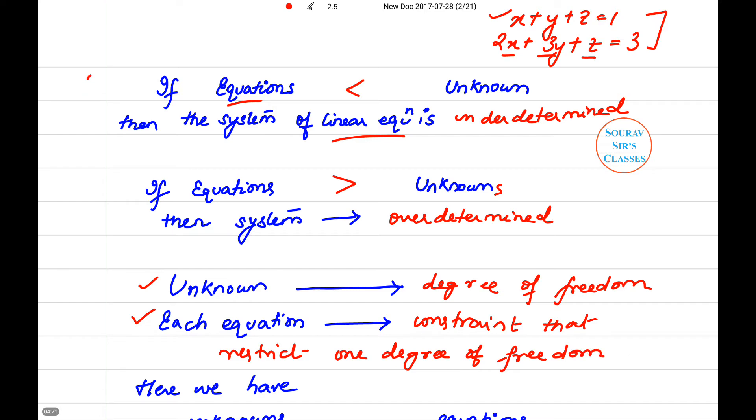That means there is imbalance, and there will be a complete balance when the number of equations will be equal to the number of unknowns.